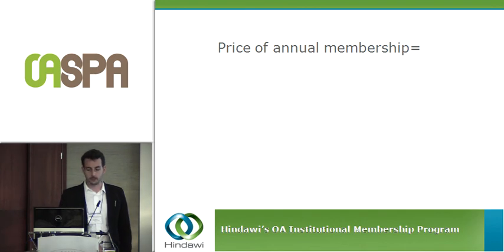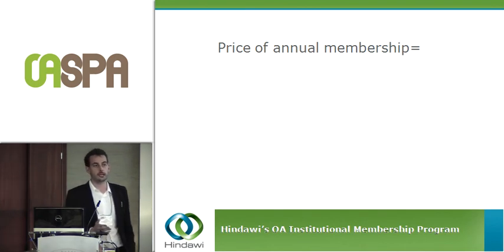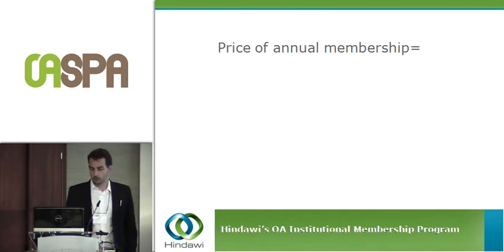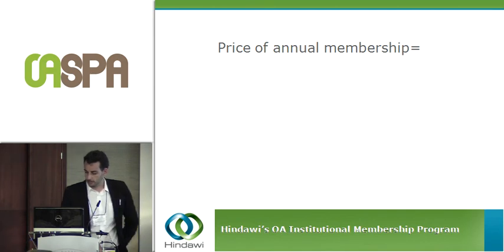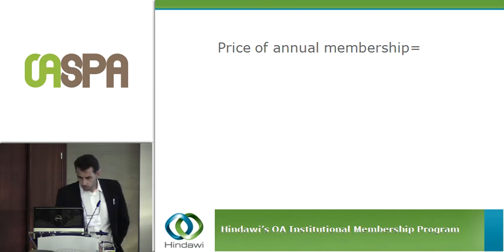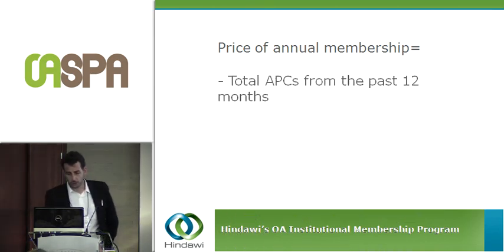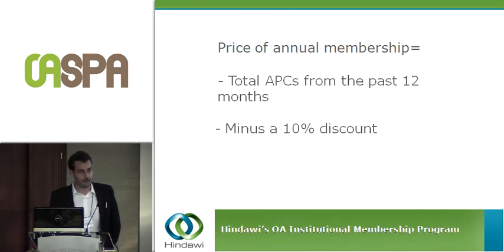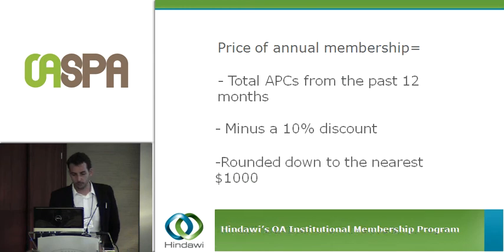Basically it is an all-you-can-eat kind of model. To calculate the price of the membership, we look at all the total APCs from that institute over the past 12 months, then apply a 10% discount and round down to the nearest thousand dollars.